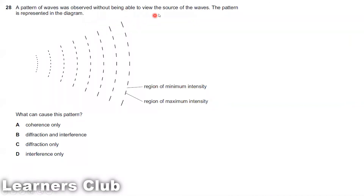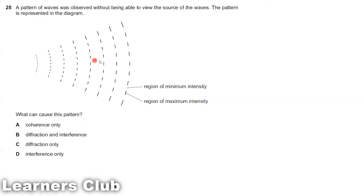Question 28: A pattern of waves was observed without being able to view the source. Which phenomenon can cause this pattern? Regions of minimum and maximum intensity are observed in diffraction as well as interference. When a wave passes through a slit it is diffracted and changes shape, producing this pattern. Therefore, the pattern is caused by both diffraction and interference, and the answer is option B.